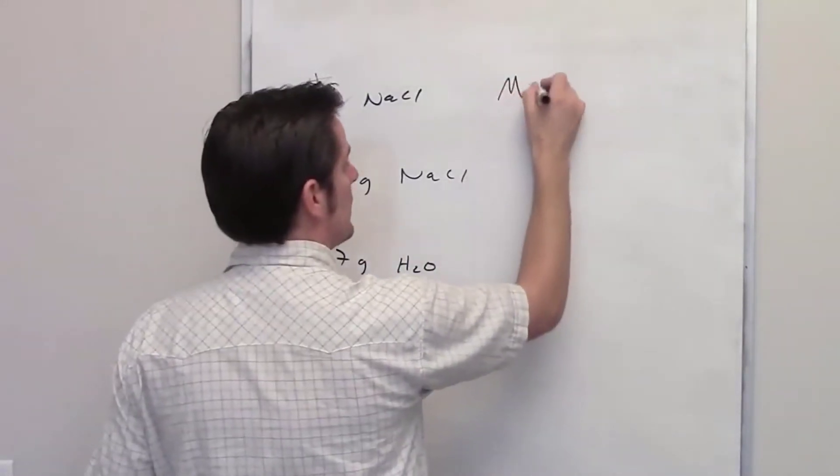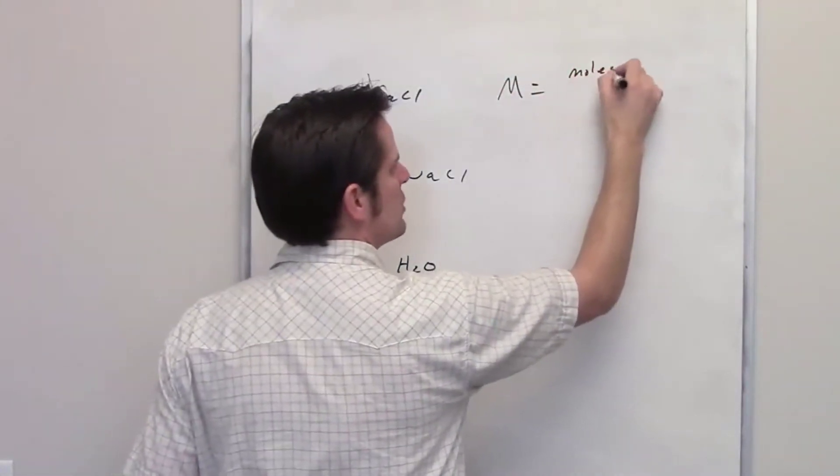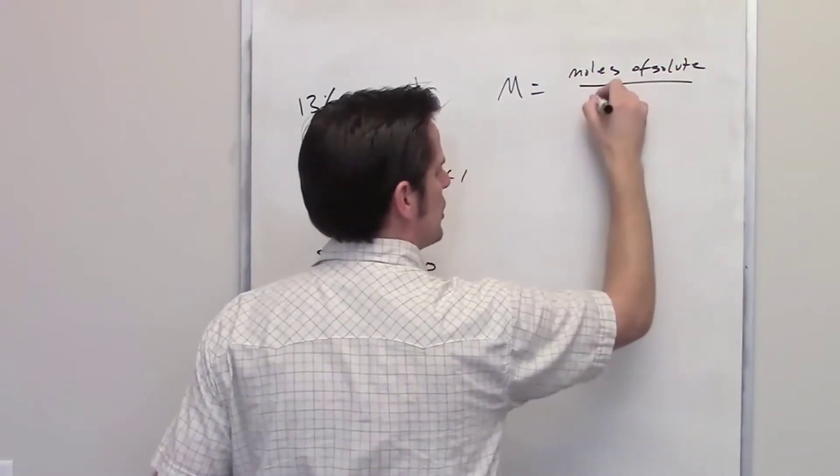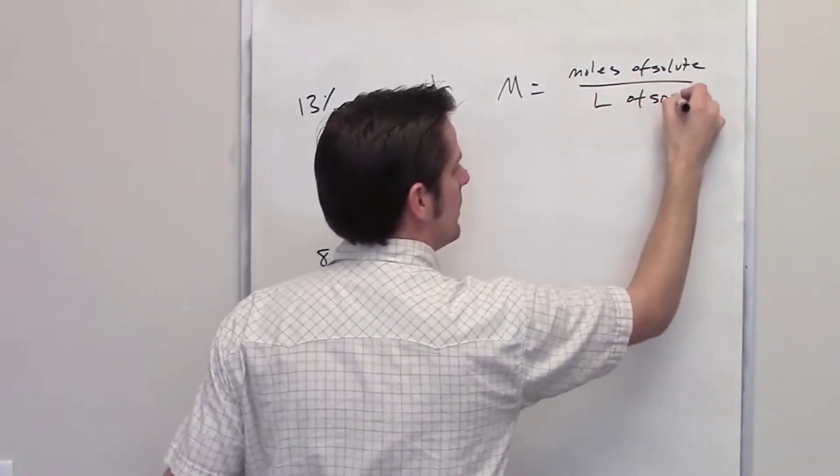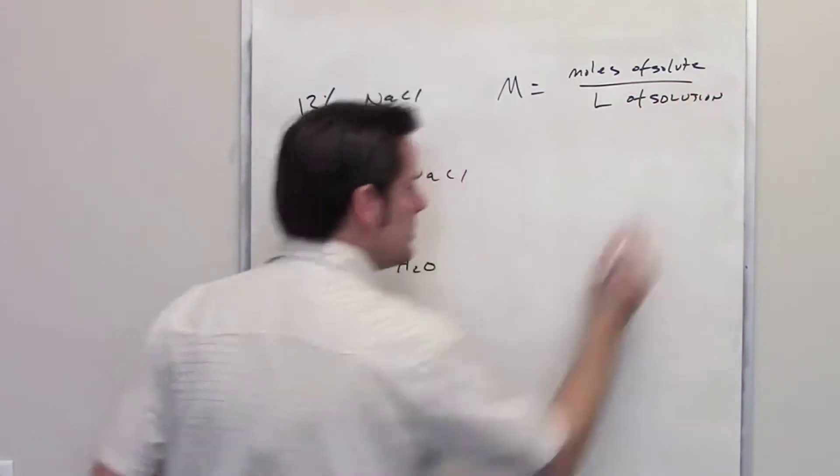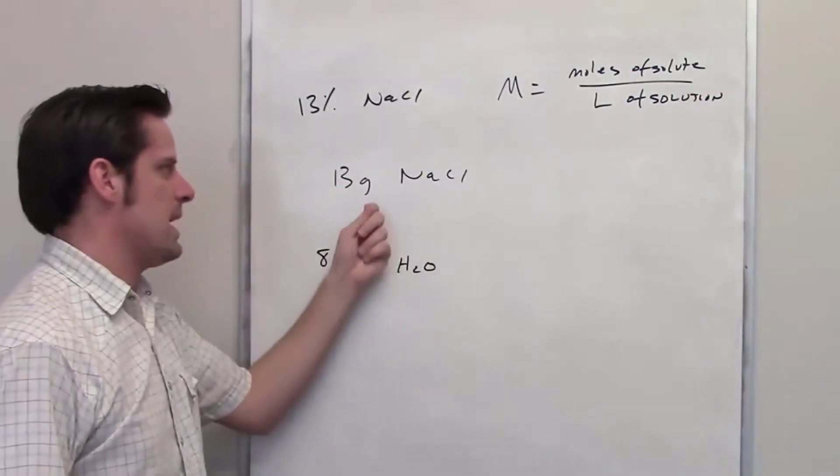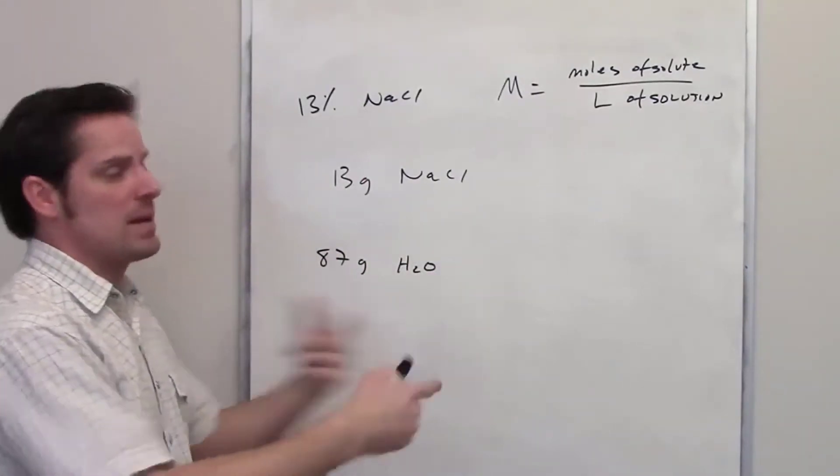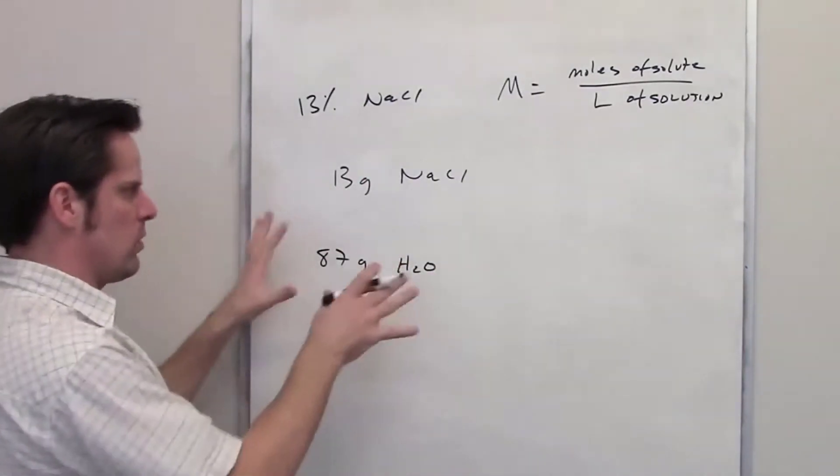Keeping in mind that molarity is equal to moles of solute divided by liters of solution, what we really need to determine now is what the total number of moles of solute would be if you had 13 grams of sodium chloride, and then how many liters of solution this would correspond to.